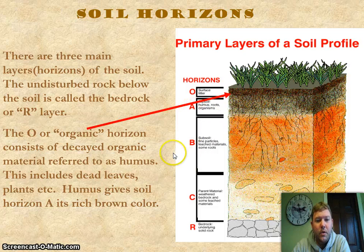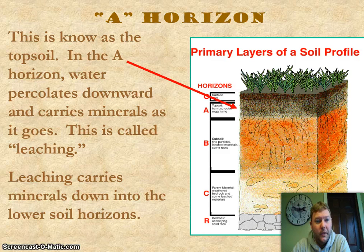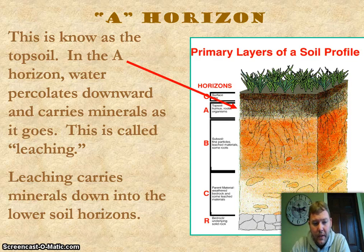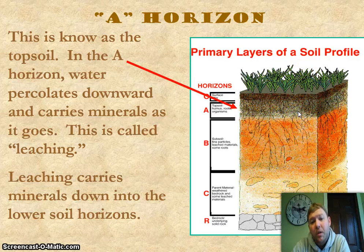Underneath that is the A layer, the A horizon, known as topsoil. We want lots of topsoil — this is what makes our soil very fertile. In the A horizon, water percolates downward and carries minerals as it goes; this is called leaching. Leaching carries those minerals down into the lower soil horizons. Farmers like lots of topsoil for plant roots, so the deeper the topsoil, the better.